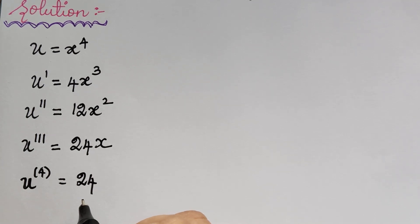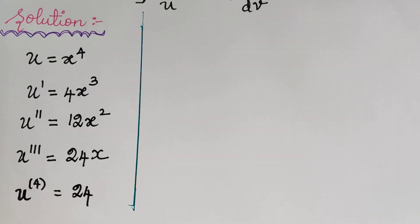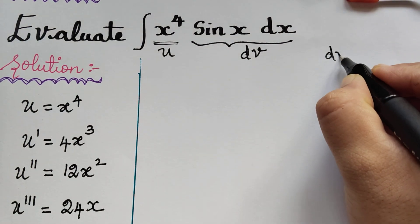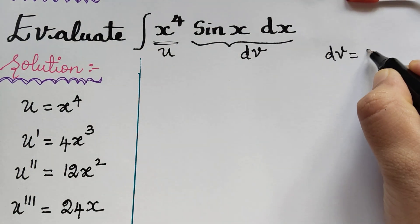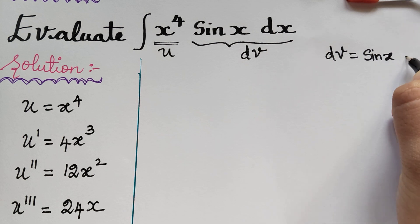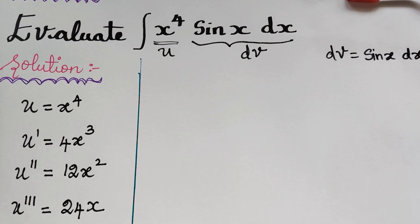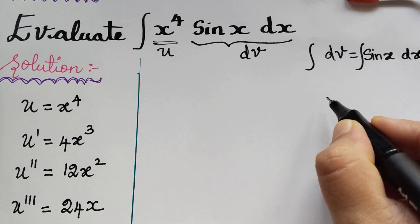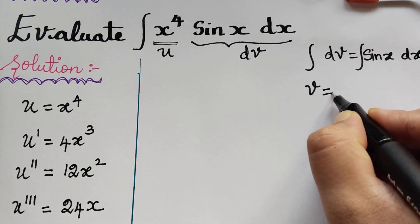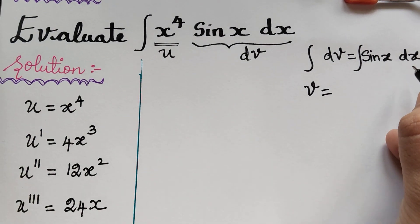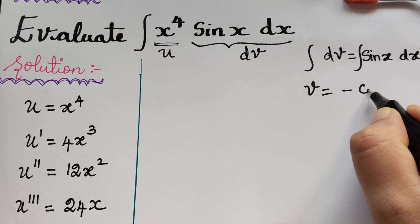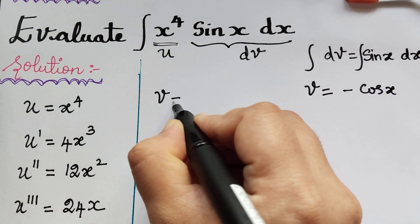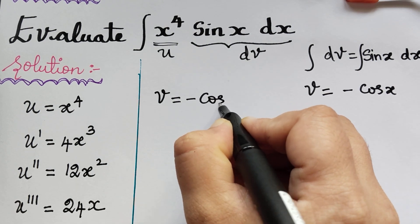Now we find v. Our dv equals sin x dx. v is obtained by integrating this with respect to x. Integrating both sides, integral of sin x dx is minus cos x. Therefore v equals minus cos x.